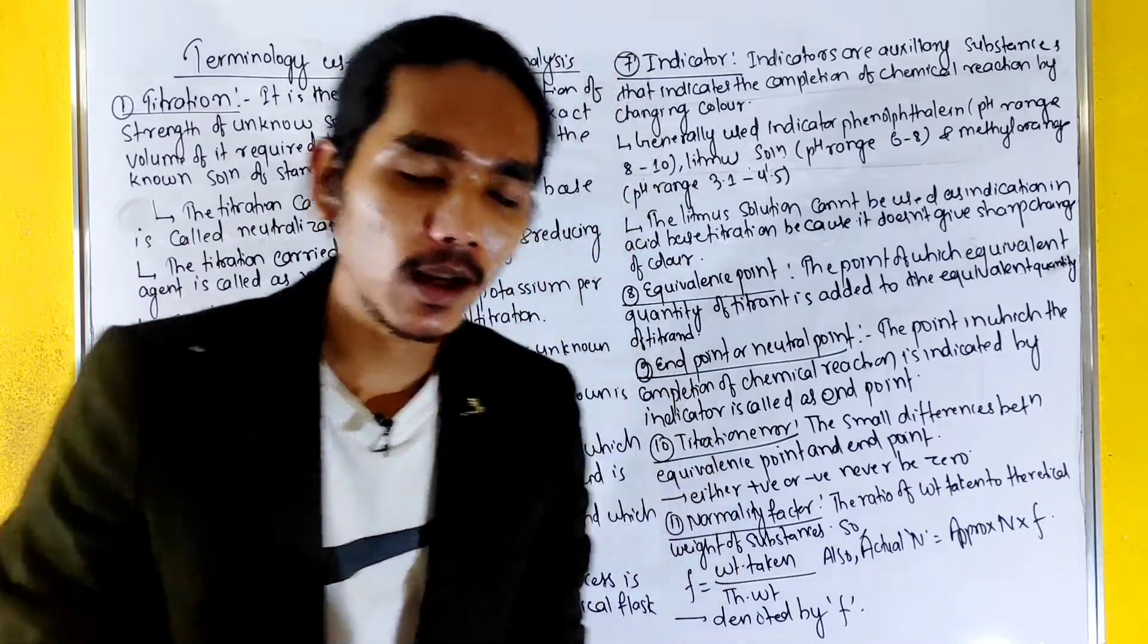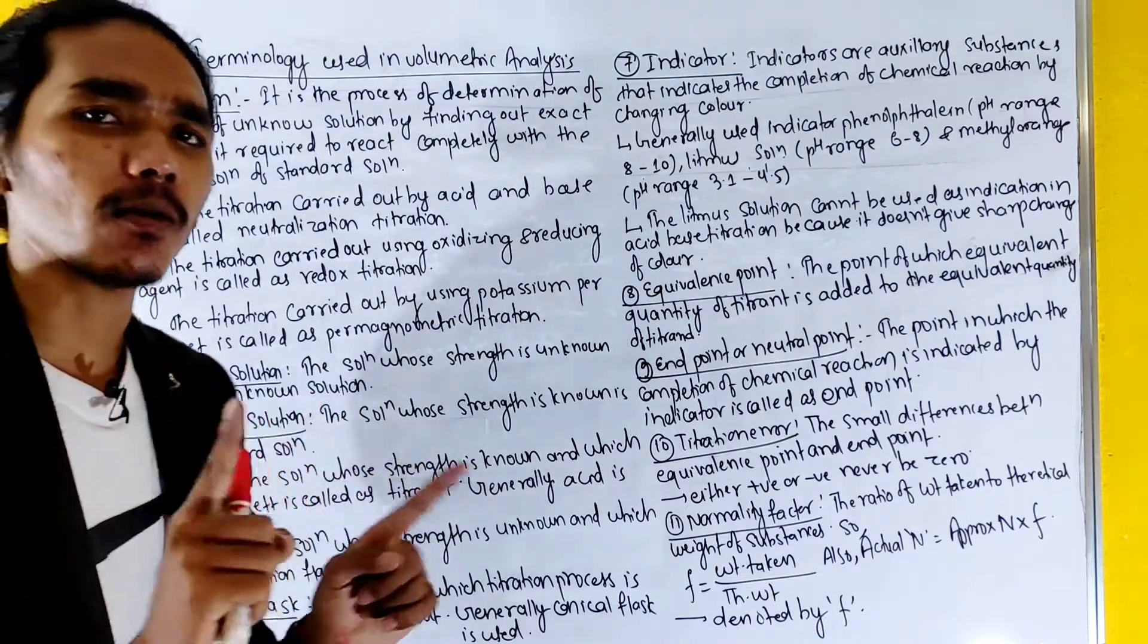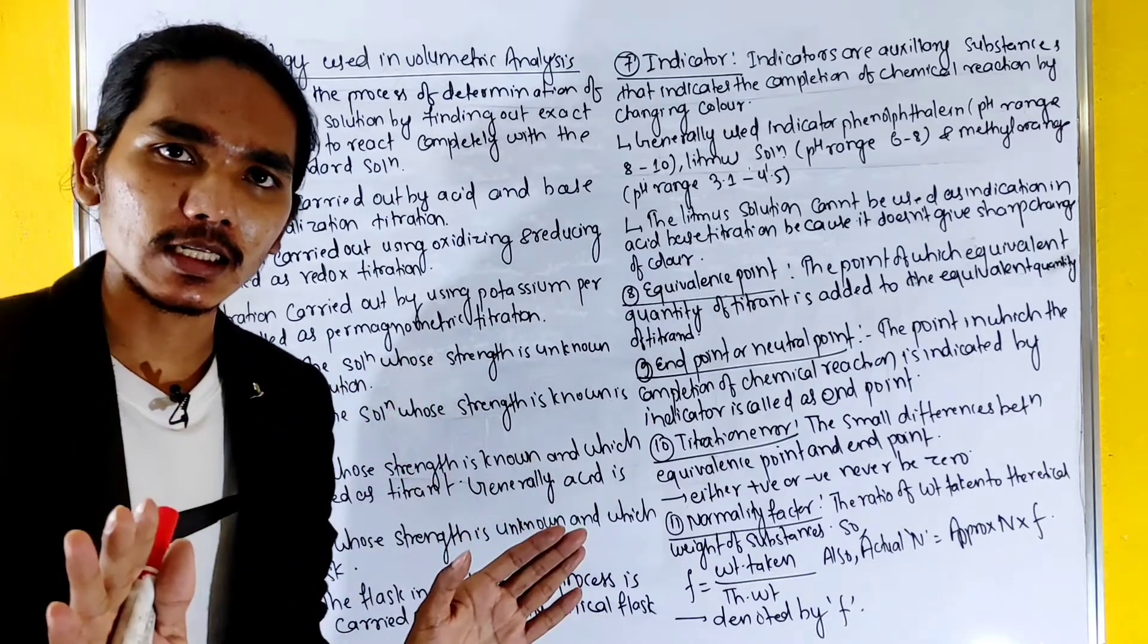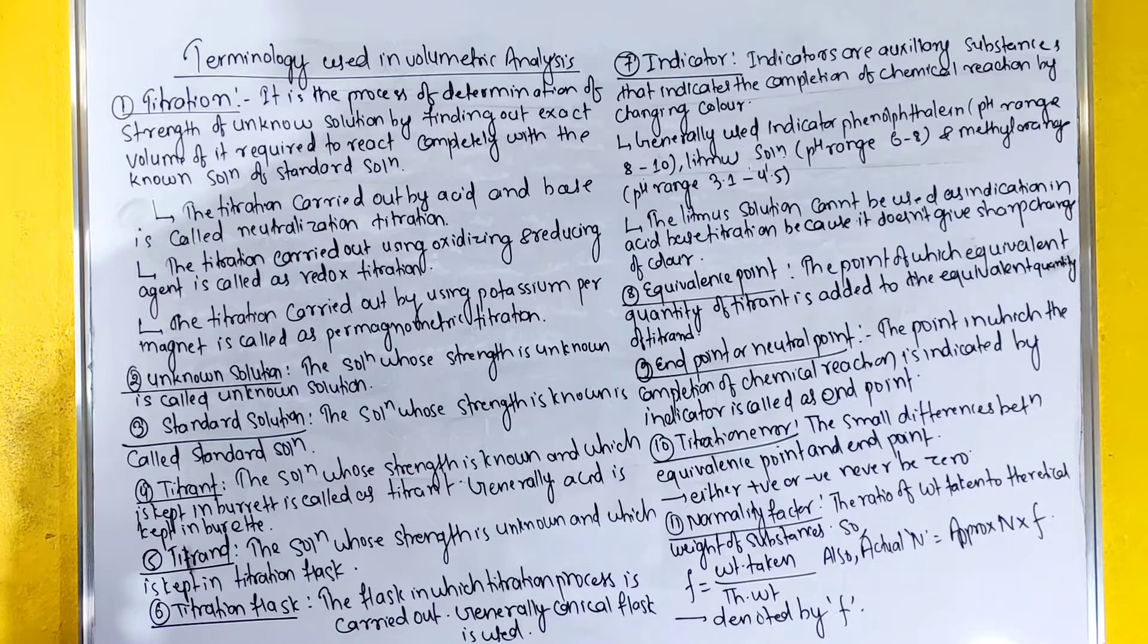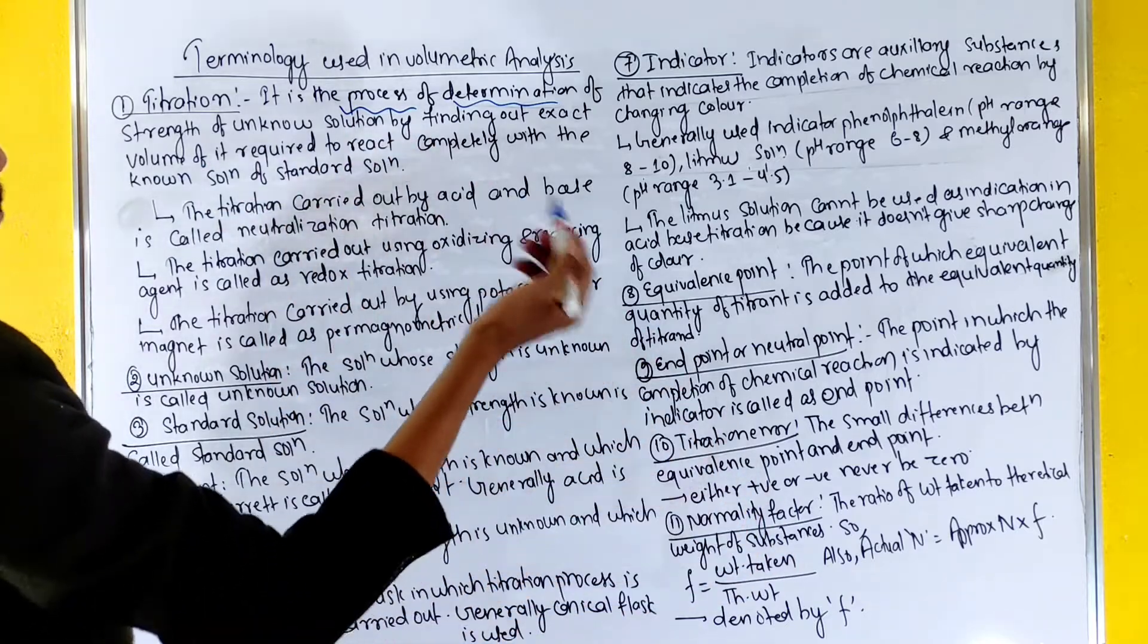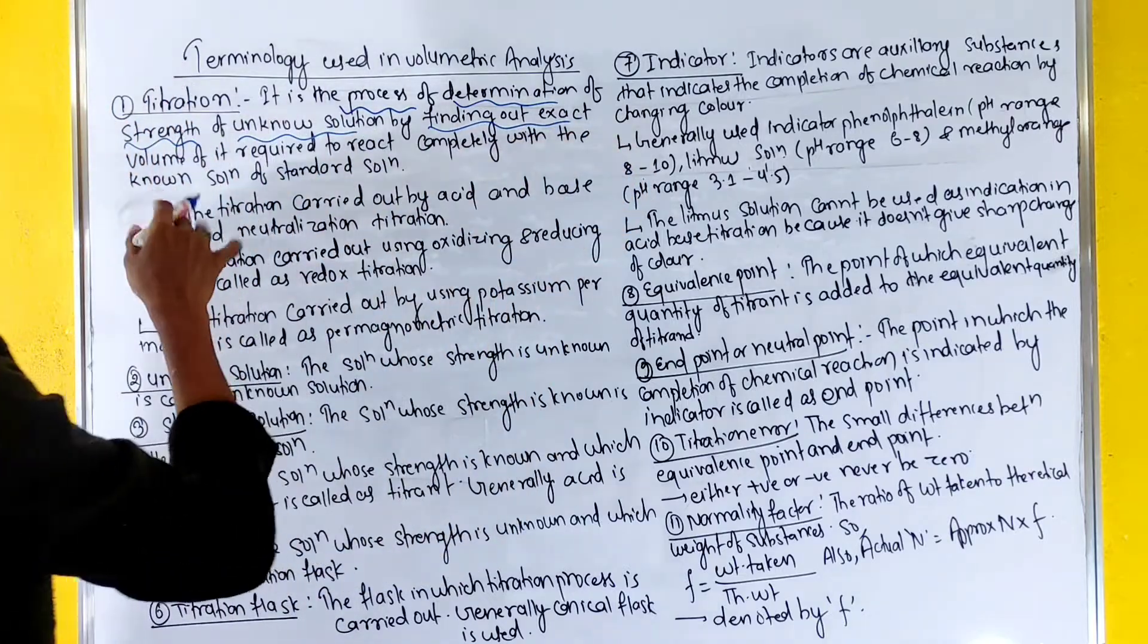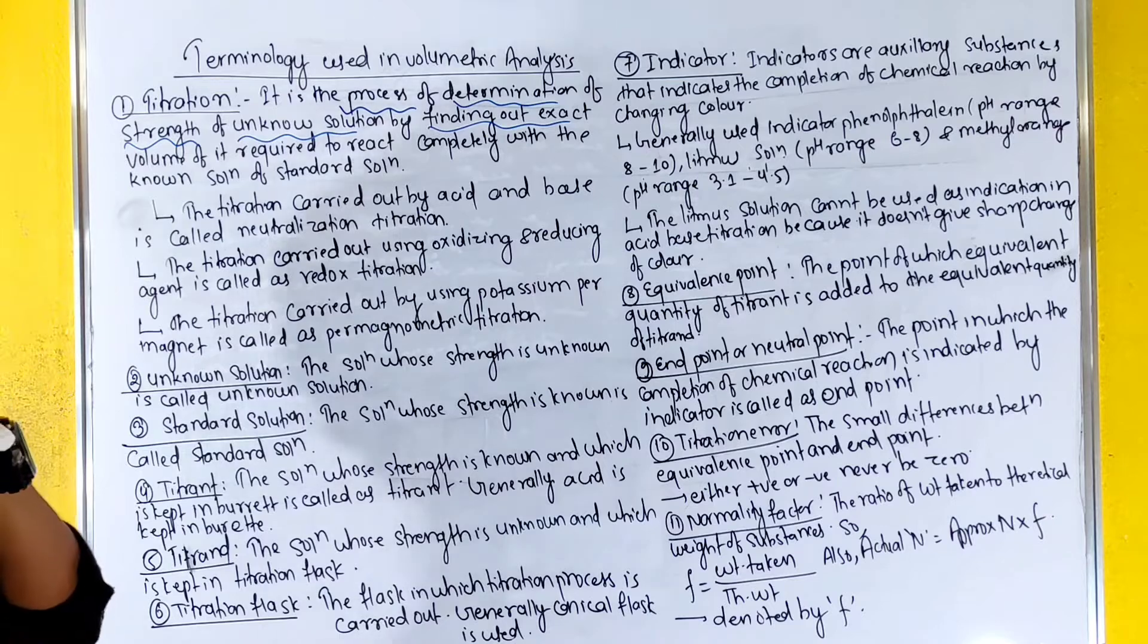Let's take a look at terminology used in volumetric analysis. Titration first. Titration is the process of determining the strength of unknown solution by finding out the exact volume of it required to react completely with the known solution.